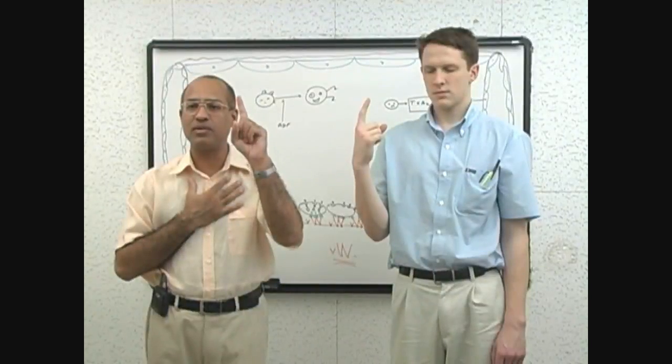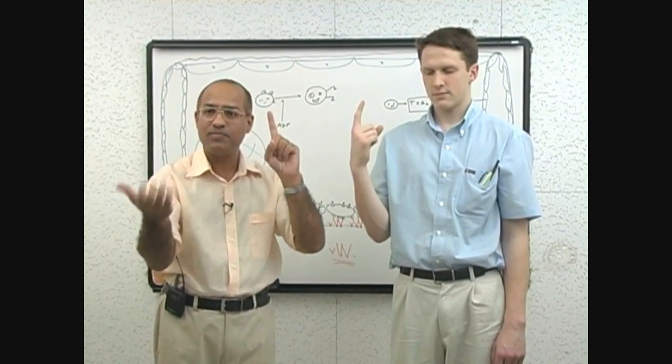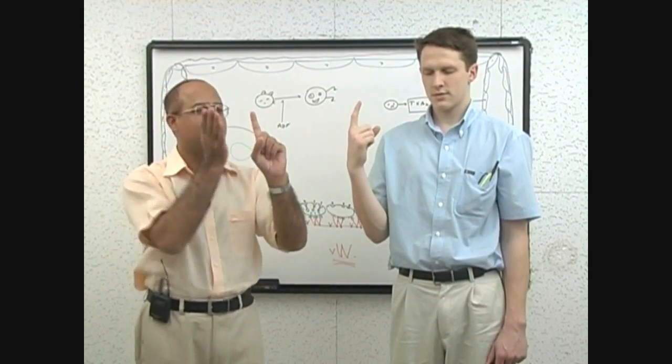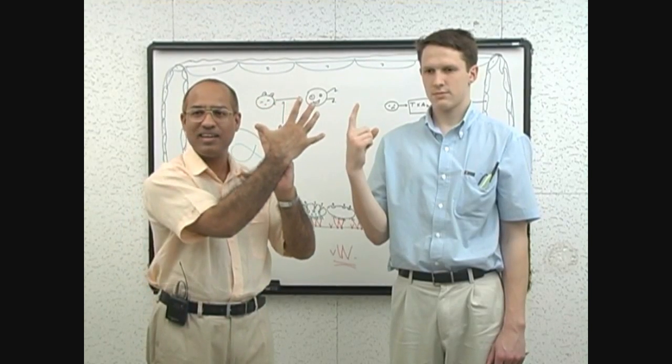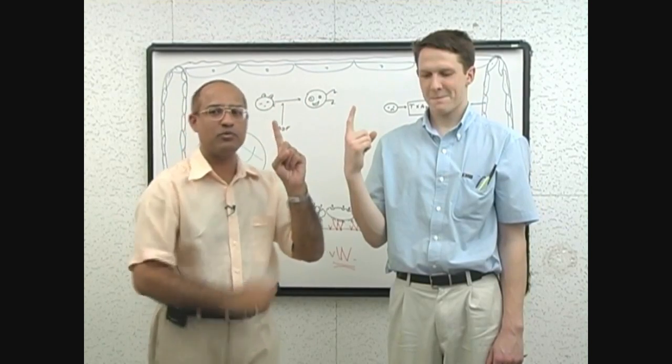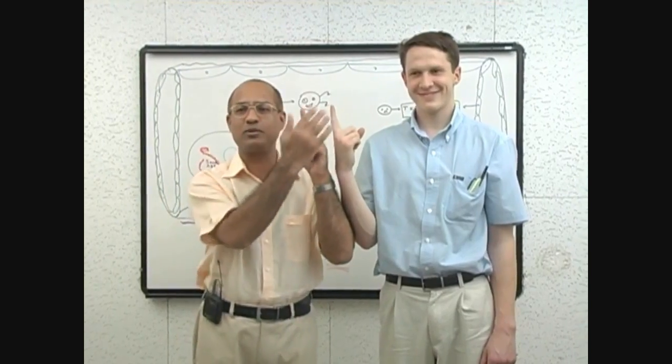So I'm a coagulation factor with gamma carboxylation. This is another coagulation factor with gamma carboxylation. This is negatively charged, this is negatively charged. Calcium comes in. It has one interaction here, one interaction here, and we are glued together. This is how calcium helps the coagulation factors to stick.